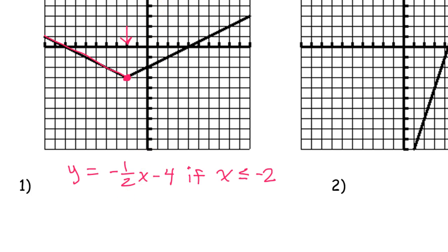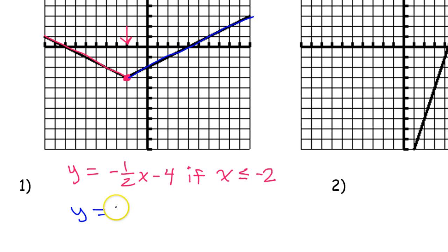Now let me change colors to make clear that everything I do now is the right-hand side of this function. This equation is going to be easier to write because we already know the slope is going down 1 over 2, so of course this slope will be going up 1 over 2. For an absolute value function, the slopes will always be the same except one is negative and one is positive.